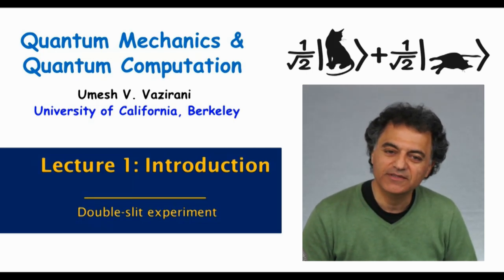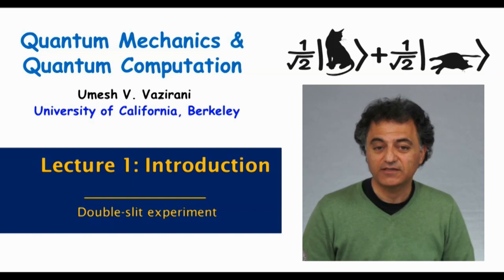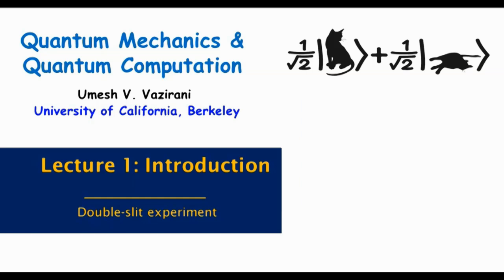In the last video, we saw this very strange behavior of elementary particles in the double-slit experiment, where on the one hand, they behave like particles. They are discrete. You always see some integer number of them, a whole number, 0, 1, 2.